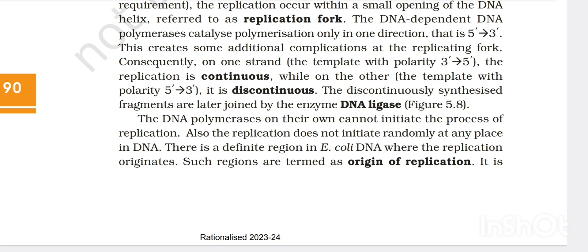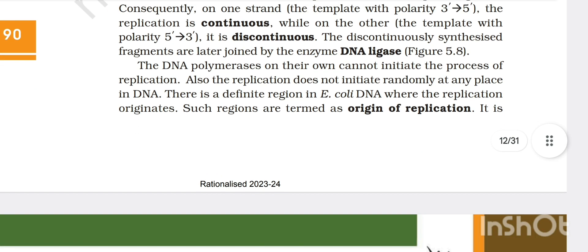This creates some additional complications to the replication fork. Consequently on one strand, the template polarity 3' to 5', the replication is continuous because on 3' to 5' template DNA polymerization occurs in 5' to 3' position and it is very normal. The replication is continuous while on the other where the template is from 5' to 3', DNA will be synthesized in a discontinuous manner. These discontinuously synthesized fragments are later joined by DNA ligase.